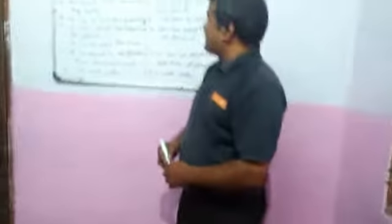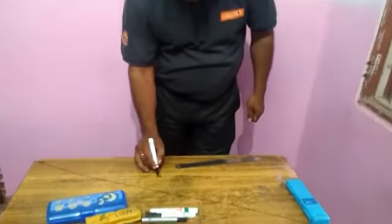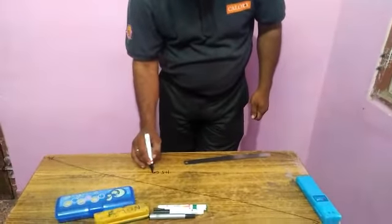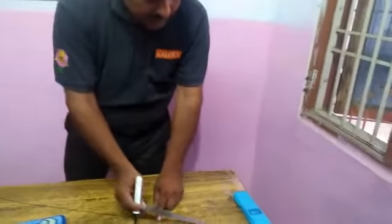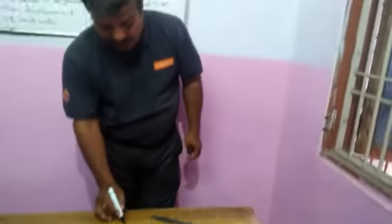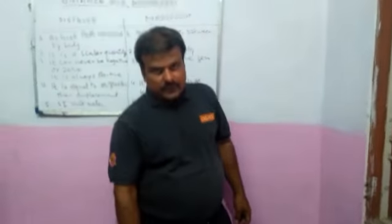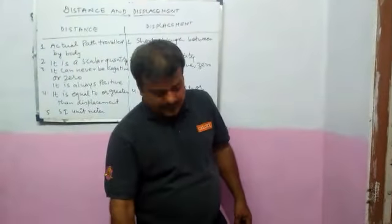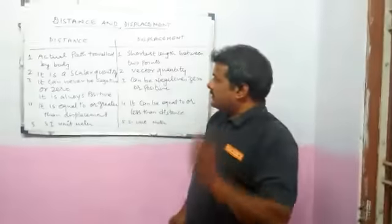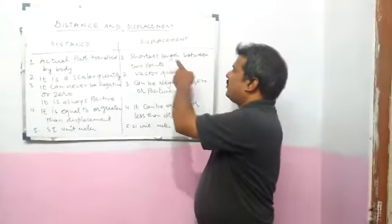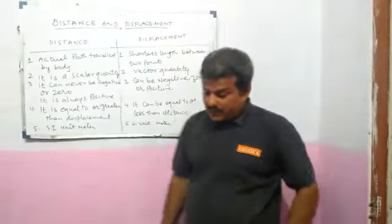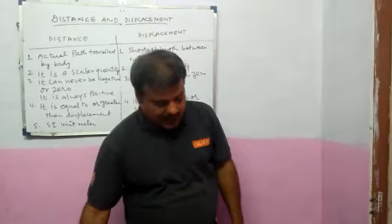We have measured the distance as 115 cm. But in case of displacement, it is 30, 60, and this is 9 — it is 90 cm. So, 90 cm is displacement and 115 cm is distance. We can say the distance is the actual path covered by the body, but the displacement is the shortest length between two points A and B.